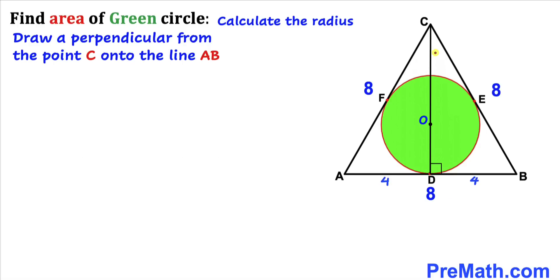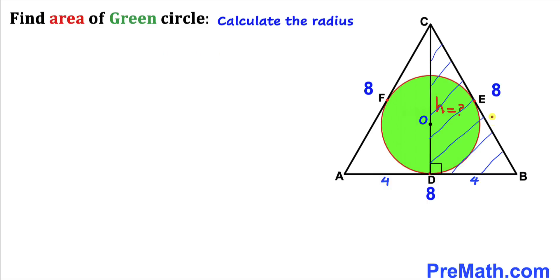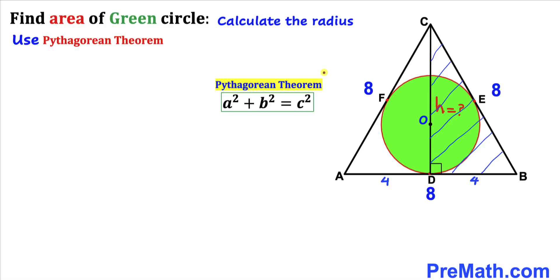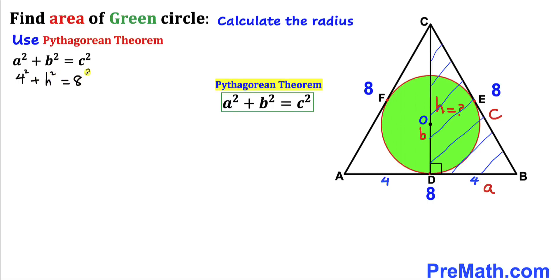Let's call the length CD as H, and now we'll find the value of H by focusing on right triangle CDB. Using the Pythagorean theorem — A² + B² = C² — we call the hypotenuse C = 8, side A = 4, and side B = H. Filling in: 4² + H² = 8².